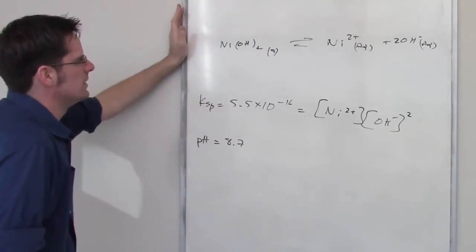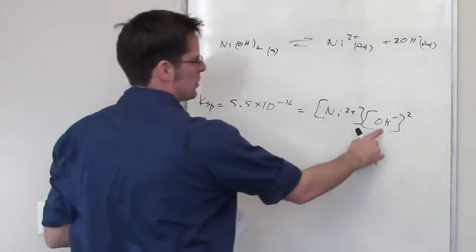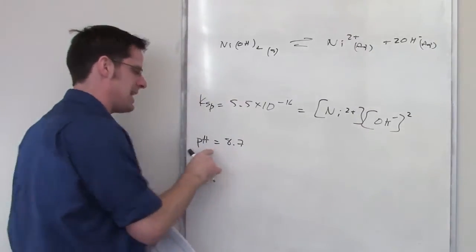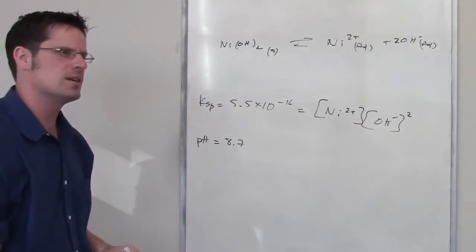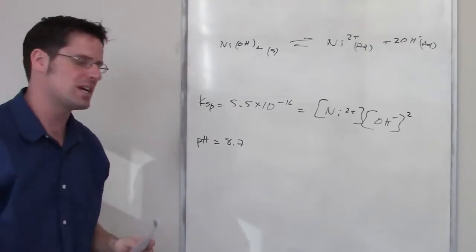What can I do with that? Can I somehow figure out what the hydroxide concentration is going to be at pH 8.7? Can I do that? I think I can, but I have to use a couple of equations.